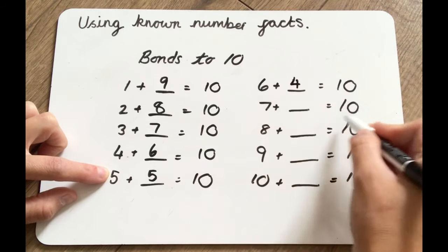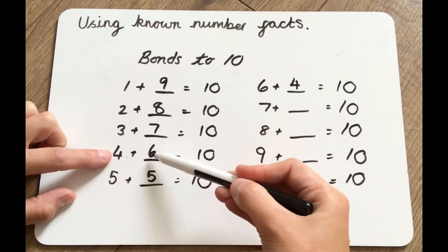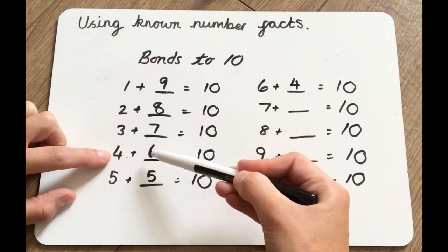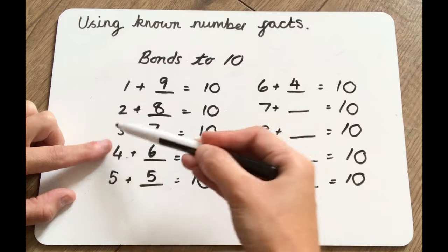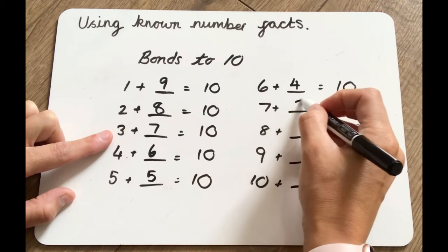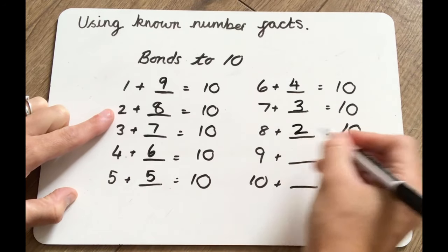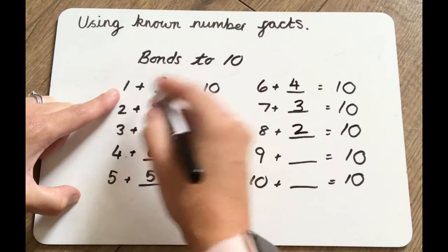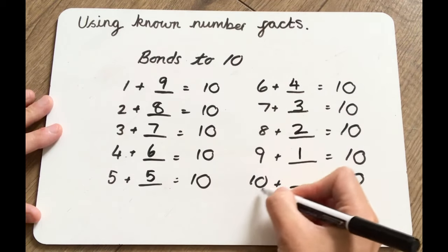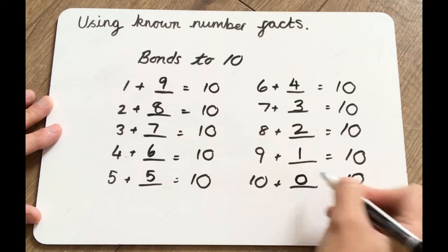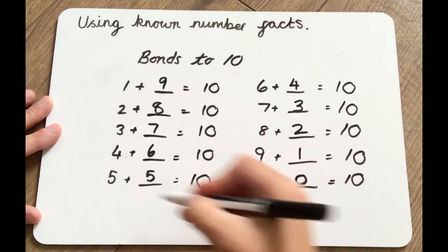We actually already know all of these ones because if we look here, we've already done it. The numbers have just switched around, and we can do that because when we're doing adding, it's cumulative. So we know 7 add 3 equals 10. 8 add 2 equals 10. 9 add 1 equals 10. And if we've got 10 already, we don't need to add any more — we're going to add 0 to equal 10. These are our bonds to 10.